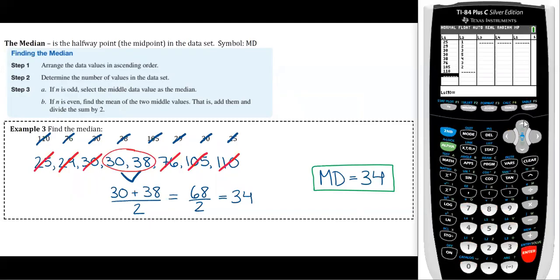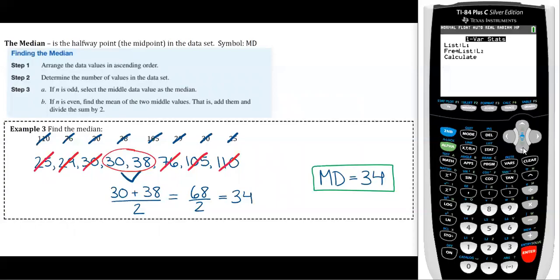Once you have all the numbers into a list, then you'll go stat, calculate, one-var stats. You can see we're going to the same place here for all of them. Now here, we're only using one list. So your frequency list, if you already have something there, make sure you clear it out. Then go to calculate. The median is off the screen. So if you go down, you'll see it right here. So MED stands for median in your calculator, and it came out to 34. You can do it by hand or the calculator. And if you ever want to get back to your home screen, you just do second mode. That's essentially quitting, and it just takes you back to your main screen.